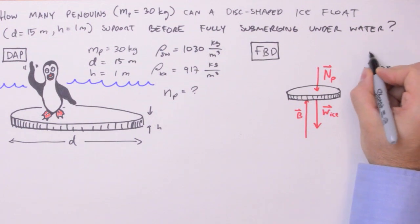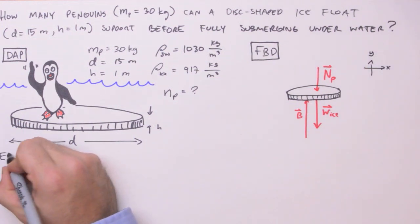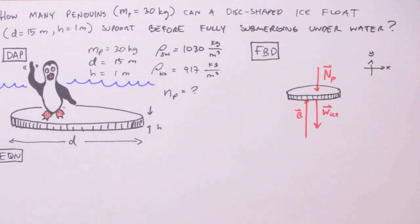Last but not least, we want to indicate our coordinate system. So now what we're going to do is utilize our free body diagram in the application of Newton's second law in the y-direction. So we write the sum of the forces in the y-direction is equal to the product of the mass and the acceleration in the y-direction.